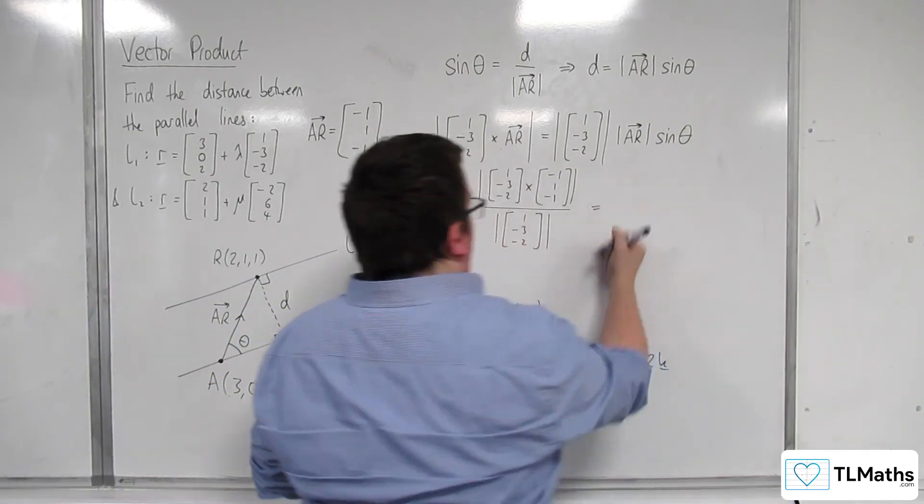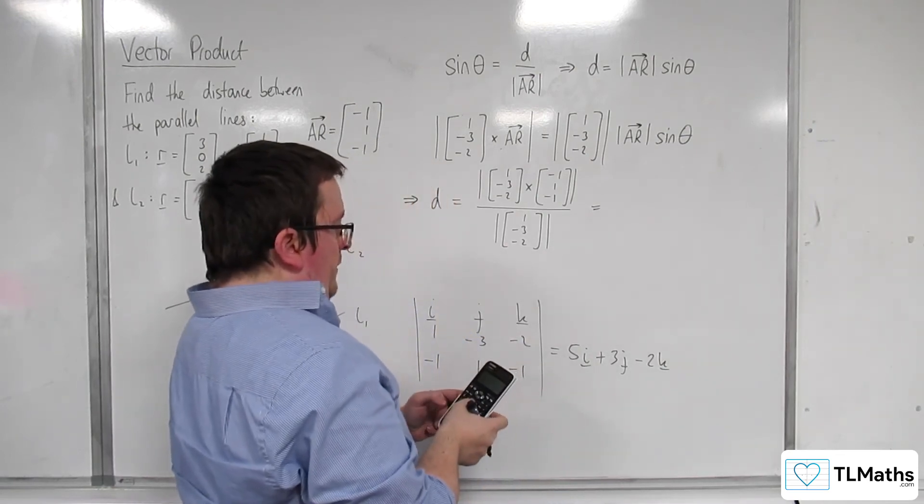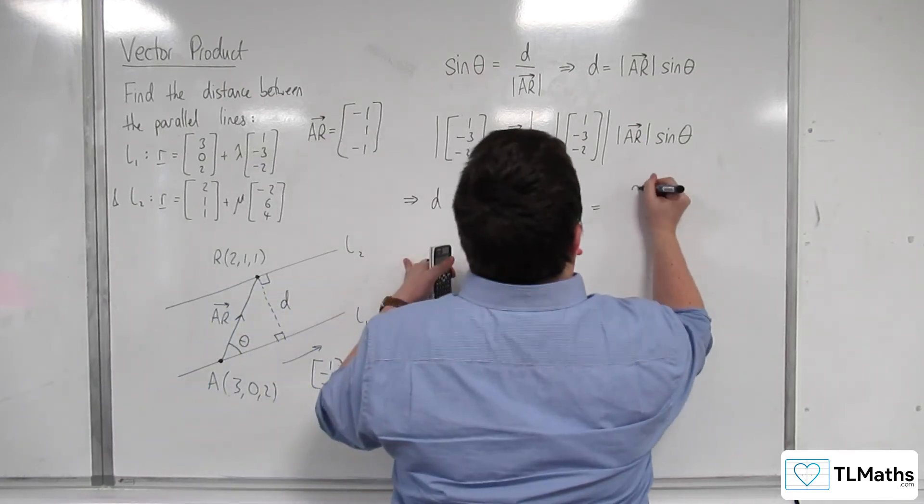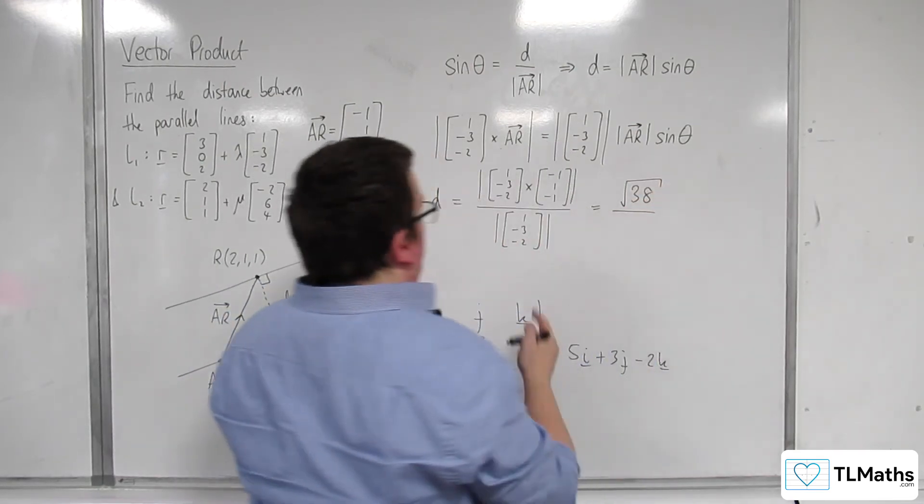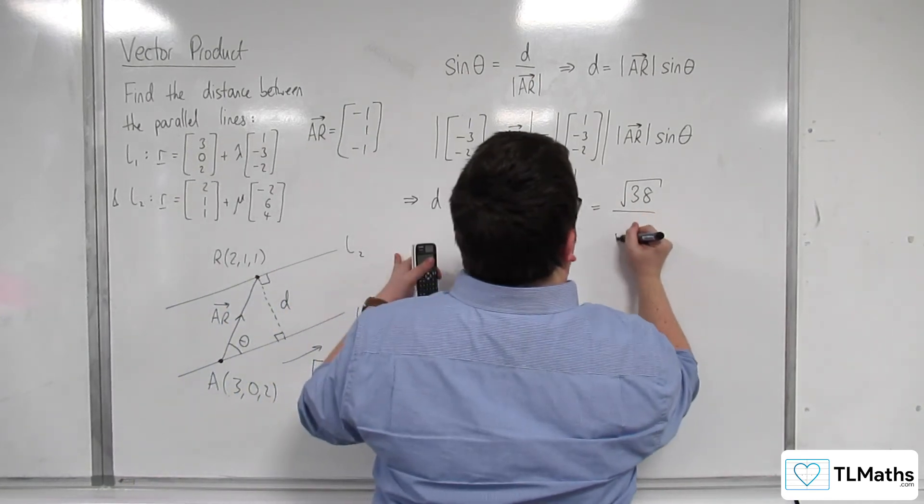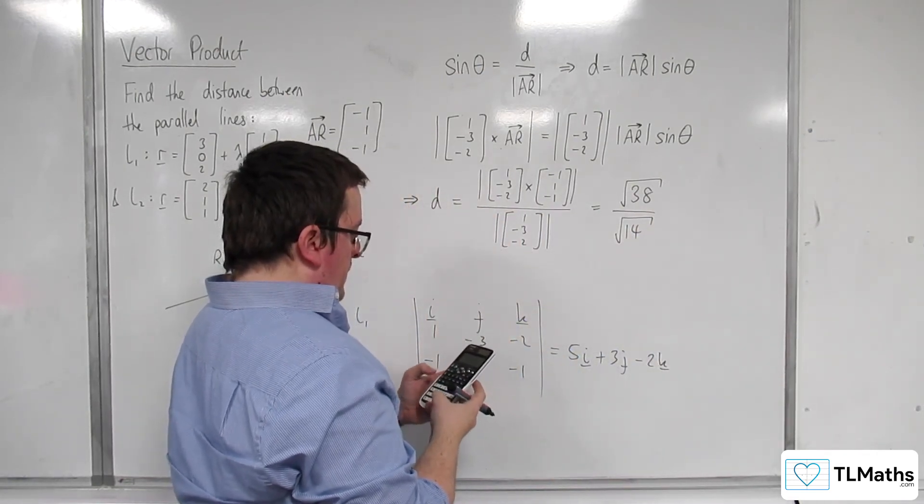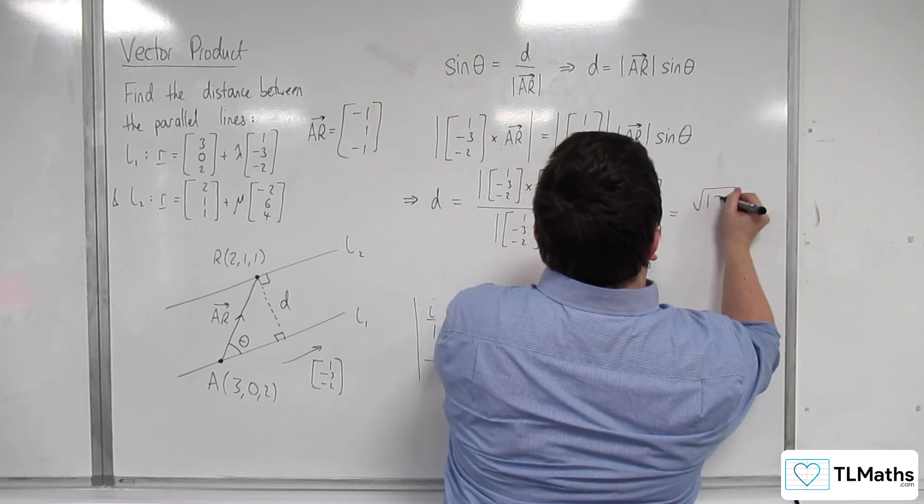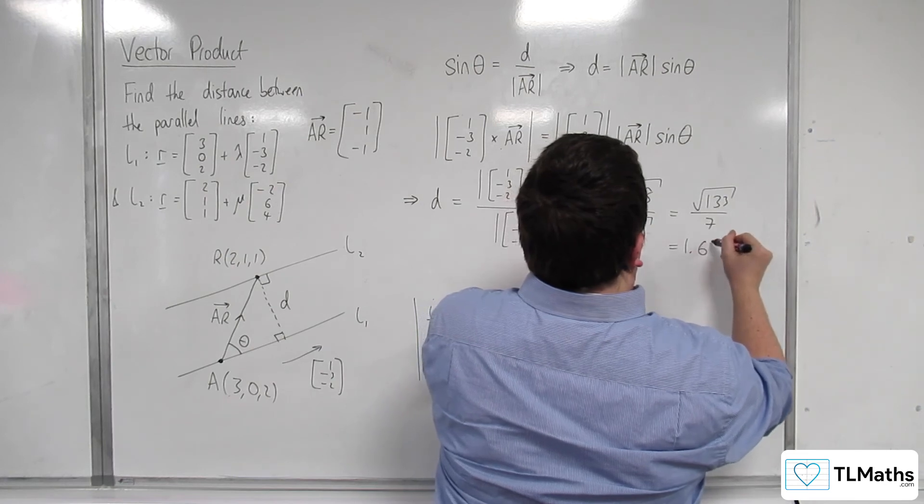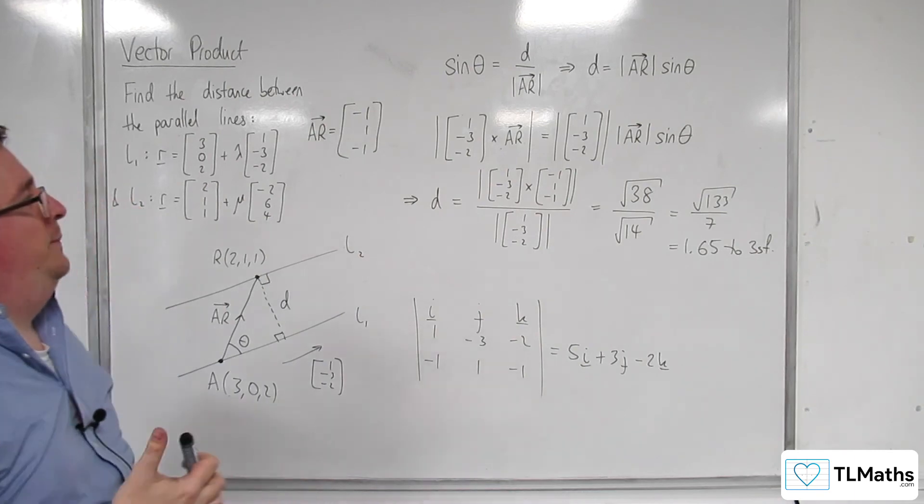Right. So this is going to be equal to the length of this vector. So 5 squared plus 3 squared plus 2 squared, so root 38, divided by the length of that vector. So 1 plus 9 plus 4, so root 14. Which is root 133 over 7. Which is 1.65 to 3 significant figures.